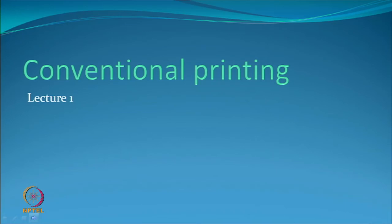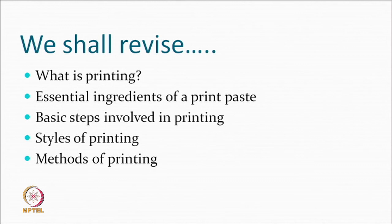We start with lecture one on conventional printing. Some of you have done textile chemistry at undergraduate level, some have not. Those who have not will need to work harder to catch up. We will spend time revising what you have done and also discuss topics you may not have covered. We will revise what printing is, essential ingredients in a printing paste, basic steps involved in printing, and styles and methods.